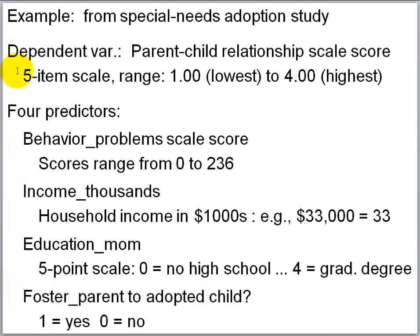The dependent variable is parent-child relationship scale score, a score on a five-item scale. The lowest possible score is one and the highest possible score is four. We have four predictors — four independent variables.